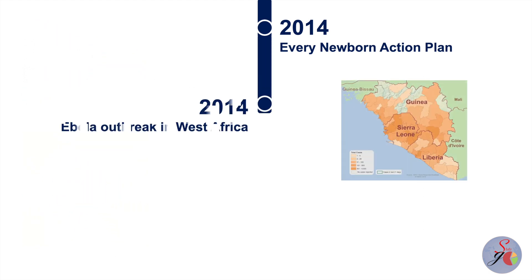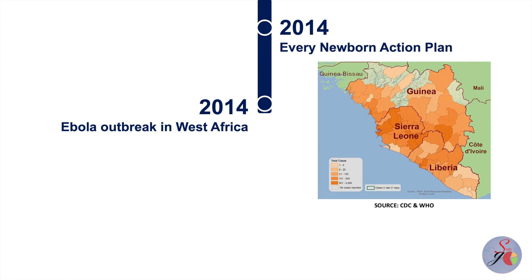The Ebola outbreak in West Africa between 2014 and 2016 was the largest since the virus was first discovered in 1976. WHO declared the outbreak a public health emergency of international concern (PHEIC). A PHEIC is defined in the international health regulations as an extraordinary event determined to constitute a public health risk to other states through the international spread of disease and to potentially require a coordinated international response.